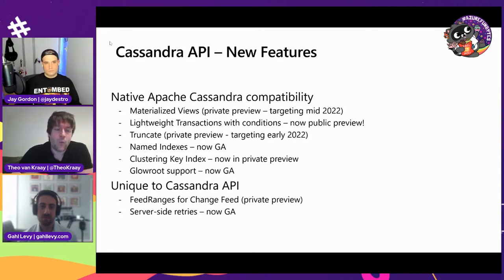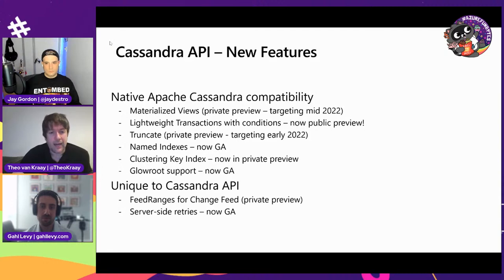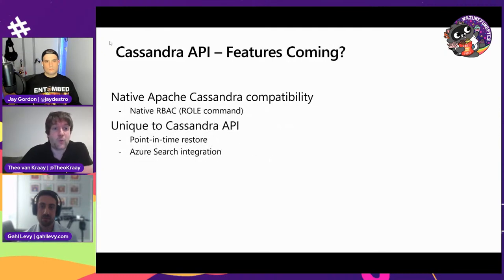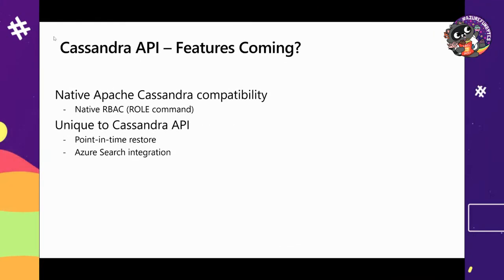We have features unique to Cassandra API: change feed is something unique to Cosmos DB — it's a programmability model for event sourcing type applications. Feed ranges is a way of doing that with processing in parallel for very large workloads. We also have server-side retries now in GA. And we're working on native RBAC, which is the role command in Cassandra.